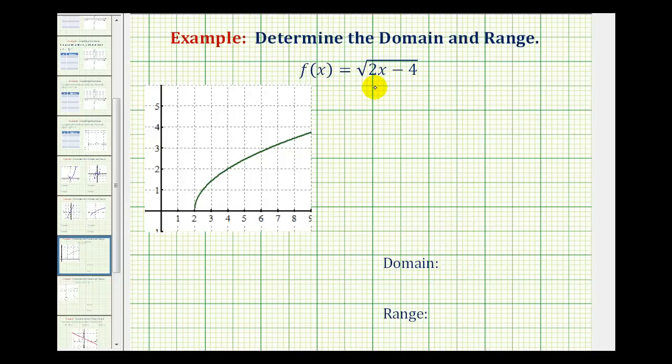So whether you make a graph using technology or with a table of values, the graph would look like this. And remember the domain is a set of all possible x values which occur on the horizontal axis and the range is a set of all possible y values and y values occur along the vertical axis.